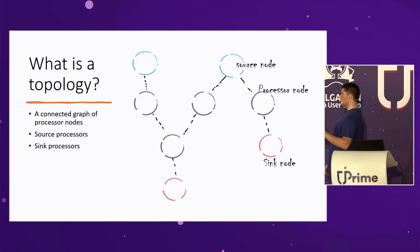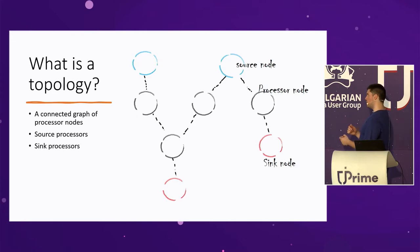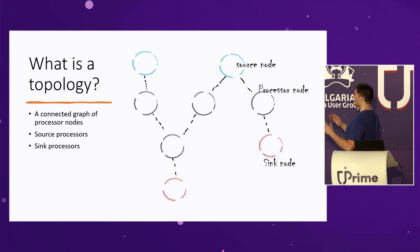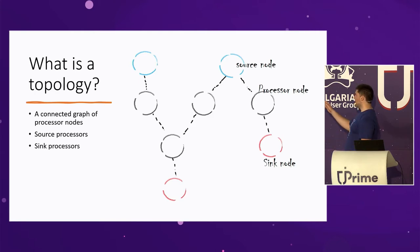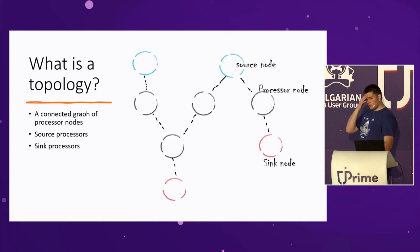We have three distinct node types. The source processor nodes — shown in blue — take input from topics; these are our consumers. The processor nodes do something with the records. And lastly we have the sink node, which you can think of as the producer — it writes to an output topic. This is what a topology looks like.